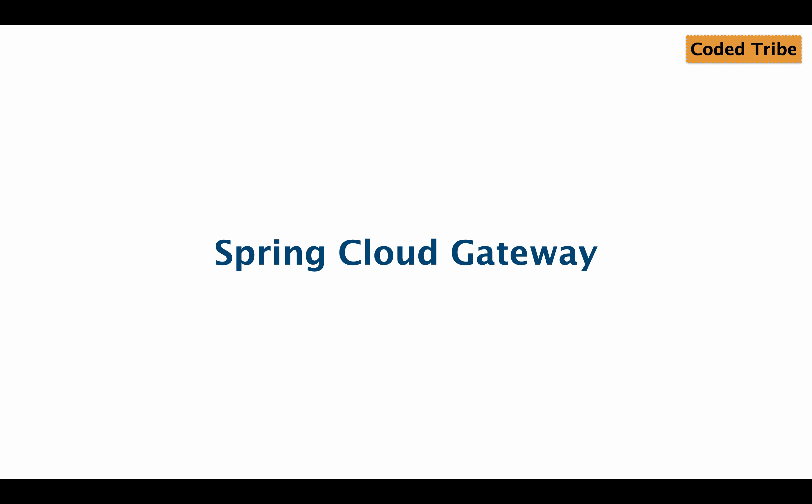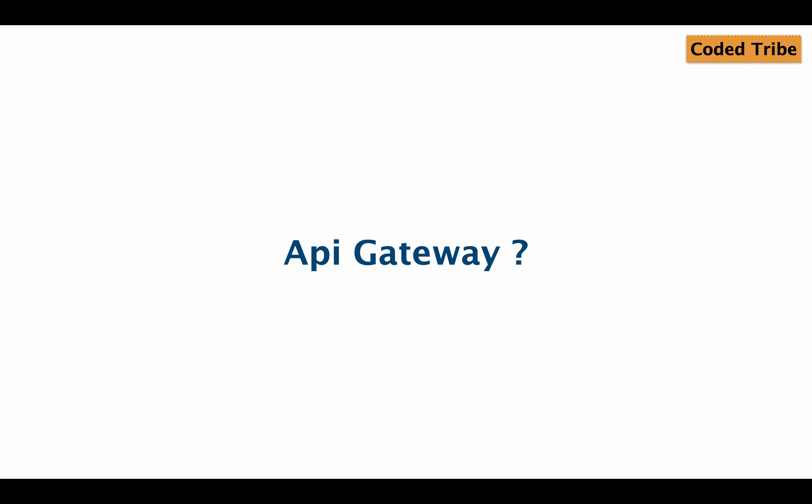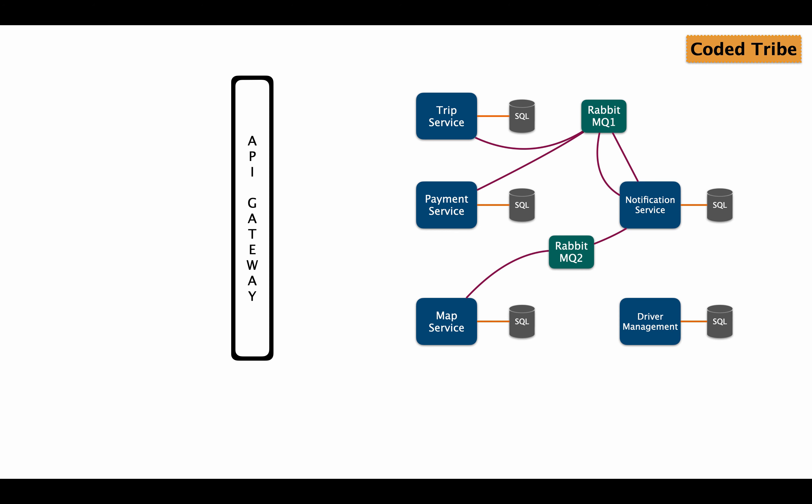Spring Cloud Gateway is an API gateway implemented by Spring for its Spring Cloud framework. An API gateway is an API management tool or service which sits between the clients and the microservices or a monolithic application. This API gateway will be a single point of entry for an application, so clients only have to interact with this API gateway.